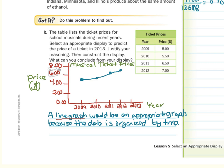What can we conclude from our display? Well, I would say that the graph shows there is a steady increase of ticket prices over time.